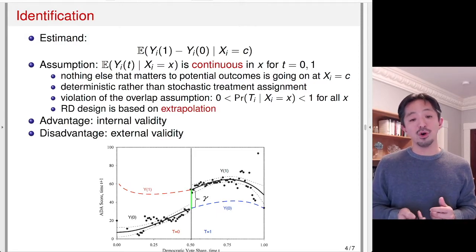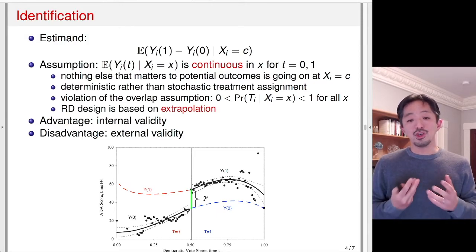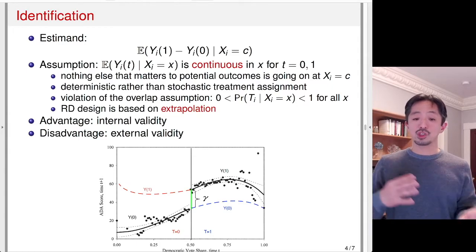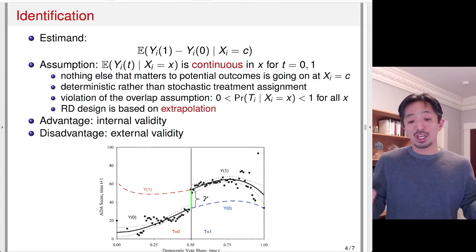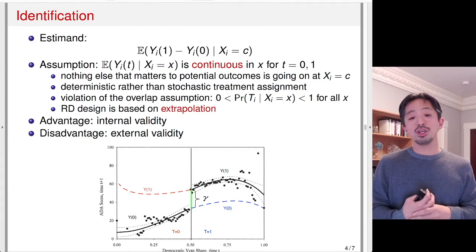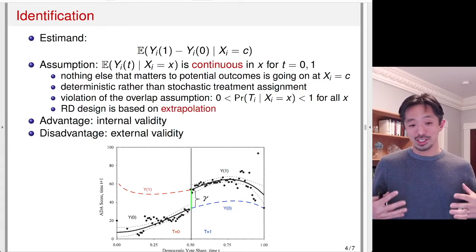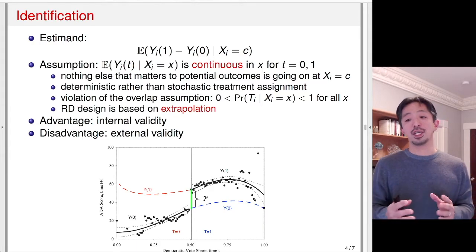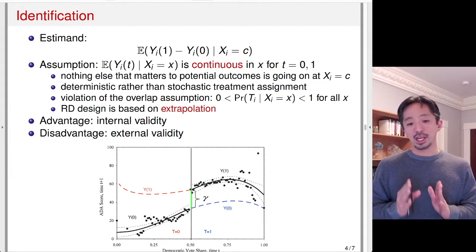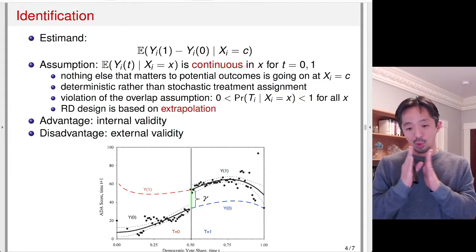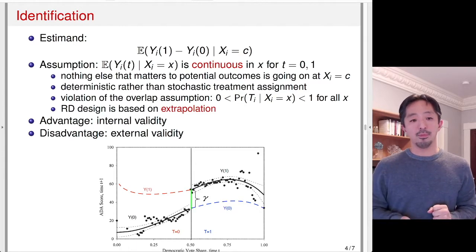So there's the usual trade-off between external and internal validity. In this case, it's an extreme trade-off because there's a lot of emphasis on internal validity, but the actual quantity you're estimating is only narrowly applicable.